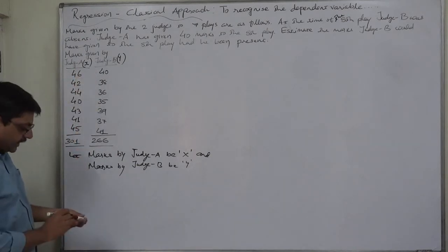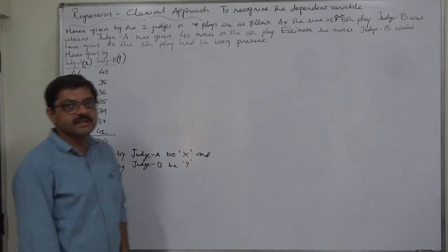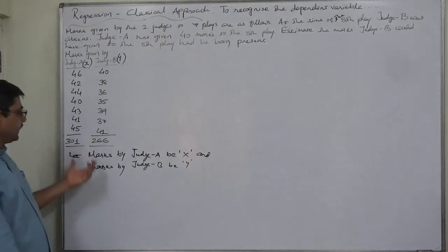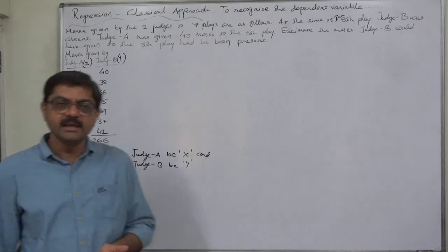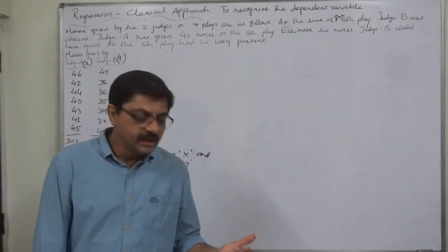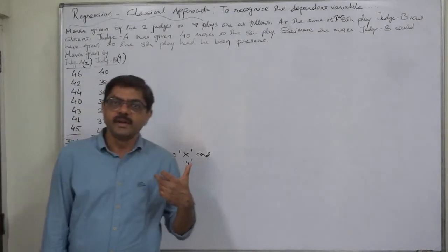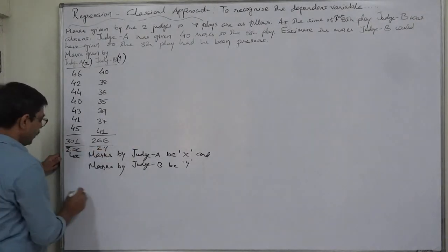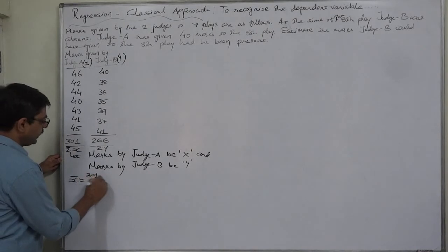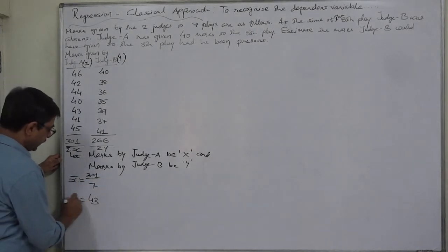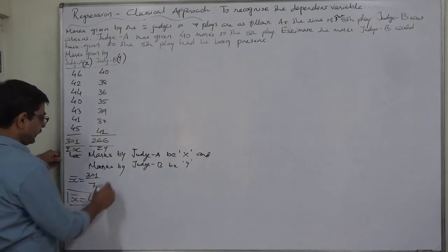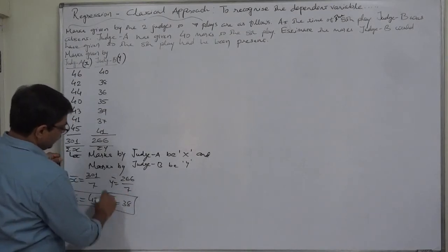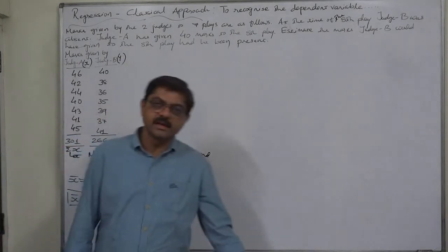Since these values are comparatively larger, I would prefer to go with deviations from mean — if the two means are integer values. If any one of the means is a fraction, we would prefer deviations from assumed mean. Let us calculate. Sigma x gives x̄ = 301 divided by 7, which is 43 — an integer. Sigma y gives ȳ = 266 divided by 7, which is also an integer value, 38. Since both means are integers, we take the path of deviations from arithmetic mean.